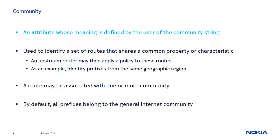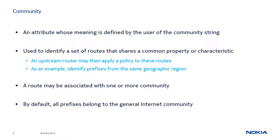A Community is an attribute whose meaning is defined by the user of the Community String. It is used to identify a set of routes that shares a common property or characteristic, so that an upstream router may apply a policy to these routes. As an example, a Community String could be used to identify prefixes associated with a particular service, or prefixes from the same geographic region. A route may be associated with more than one Community, to indicate that it has multiple characteristics.